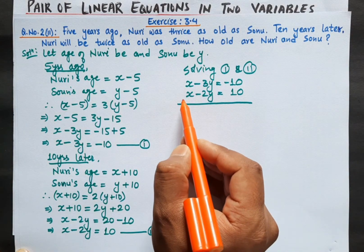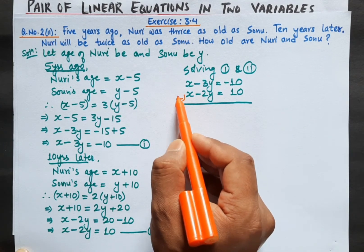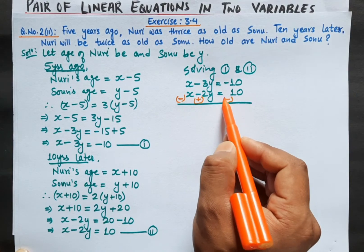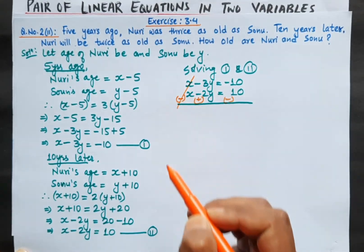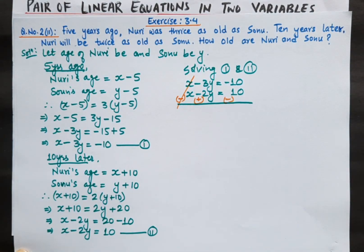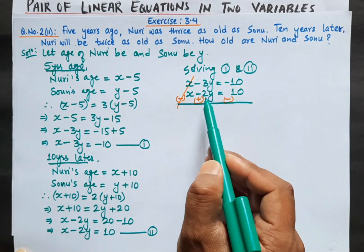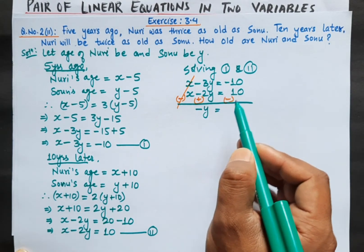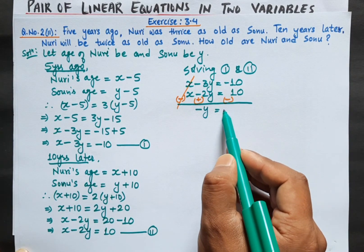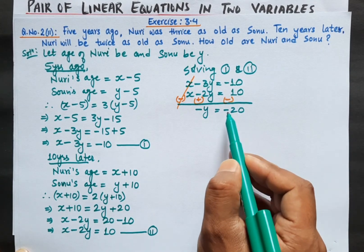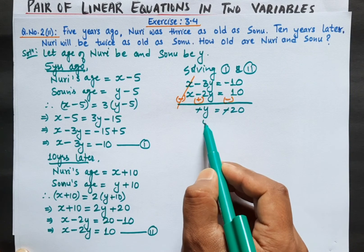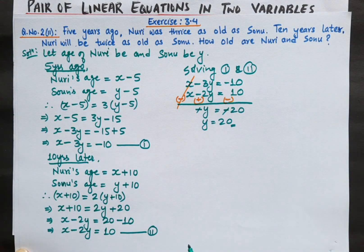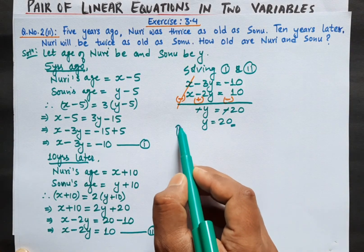Equation 1 is x minus 3y equals minus 10, and equation 2 is x minus 2y equals 10. Since the coefficient of x is the same, we subtract. The x terms cancel: minus 3y plus 2y gives minus y, and minus 10 minus 10 gives minus 20. So minus y equals minus 20, and the negatives cancel, giving y equals 20.